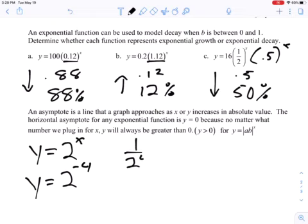We would get 1 over 2 to the 4th, which equals 1/16th. If you plugged in something like 50, well, 2 to the negative 50 is 0.0000000000000008 something. I mean, it's super small.